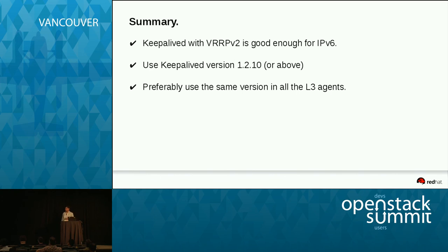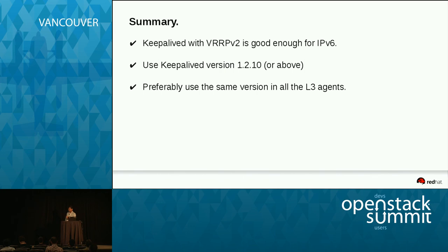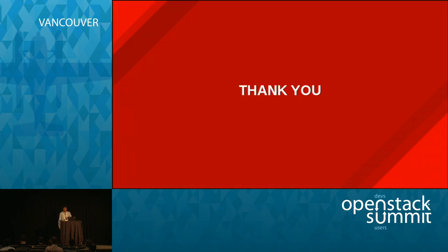The key takeaway is that we need not wait for VRRPv3 for IPv6 functionality, because of the specific way keepalived works and how we are using it. You do need keepalived version 1.2.10 or above, and you should use the same version of keepalived on all your agents for consistent behavior.